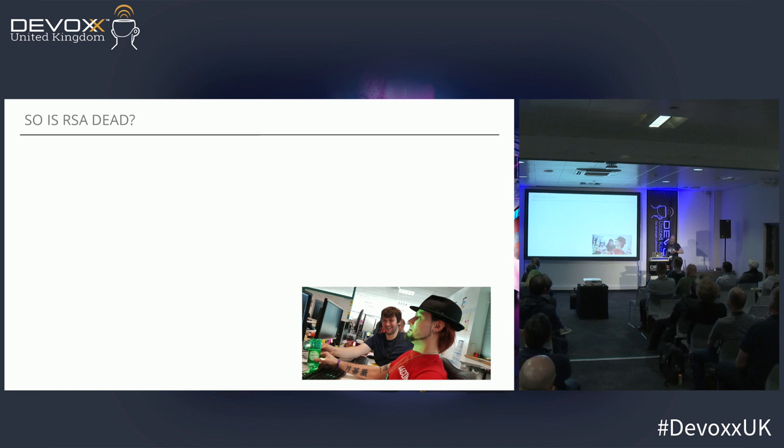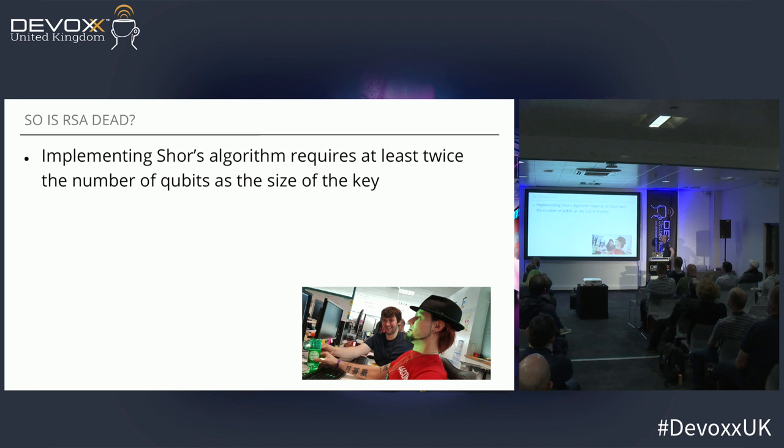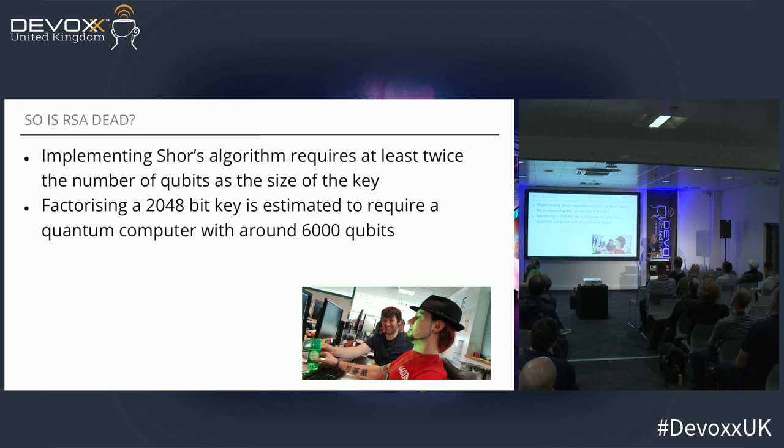So, do we care? Is RSA under threat? Well, Shor's algorithm needs twice as many qubits as the size of the key in order to implement the quantum Fourier transform. So if you want to factorise a 1,024-bit number, you need about 2,000 qubits.